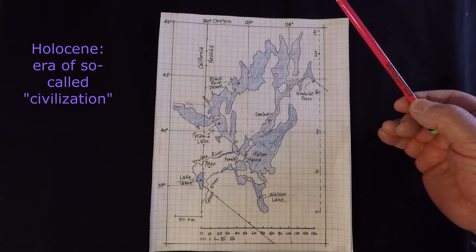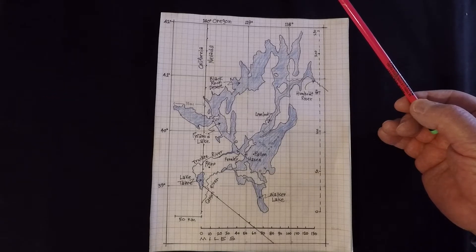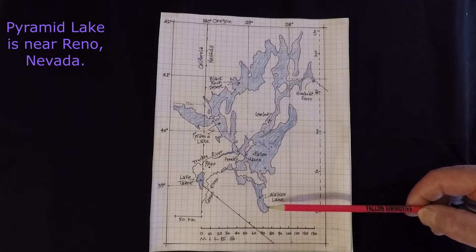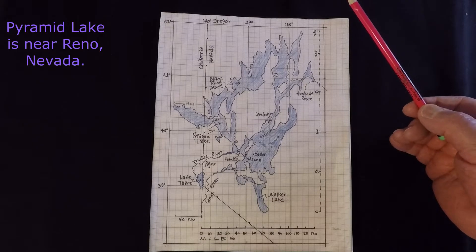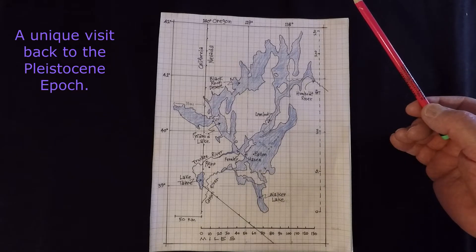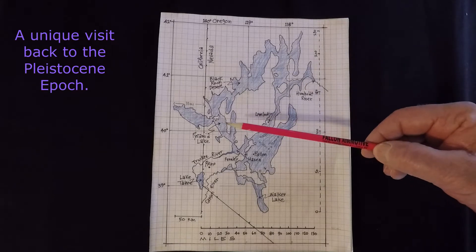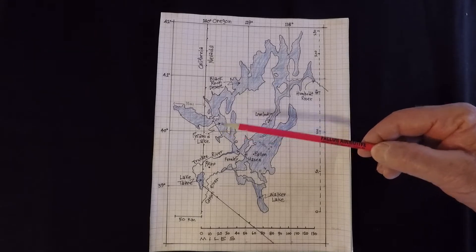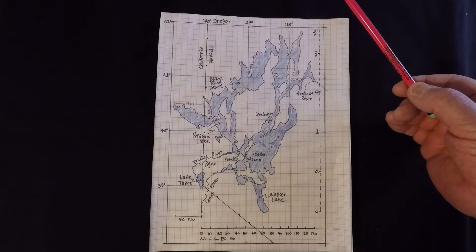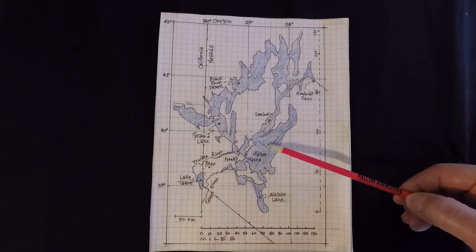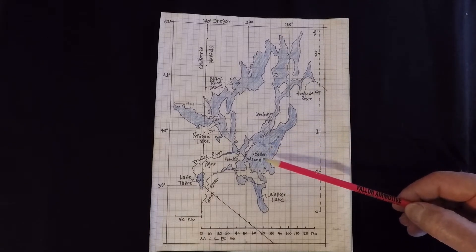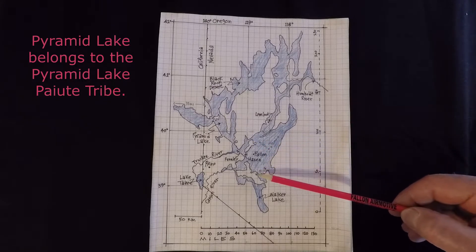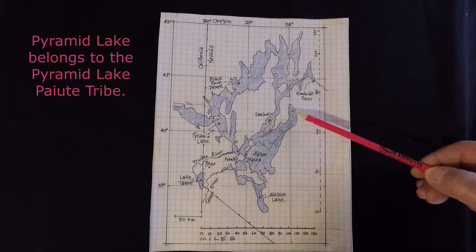Remnants are left as present-day Pyramid Lake and Walker Lake. In Pleistocene times, the lake was 900 feet deep at Pyramid Lake — similar to Lake Erie. Over present-day Lahontan Valley in the Fallon area, it was 400 feet deep. Here it was 30 miles wide and 90 miles long.